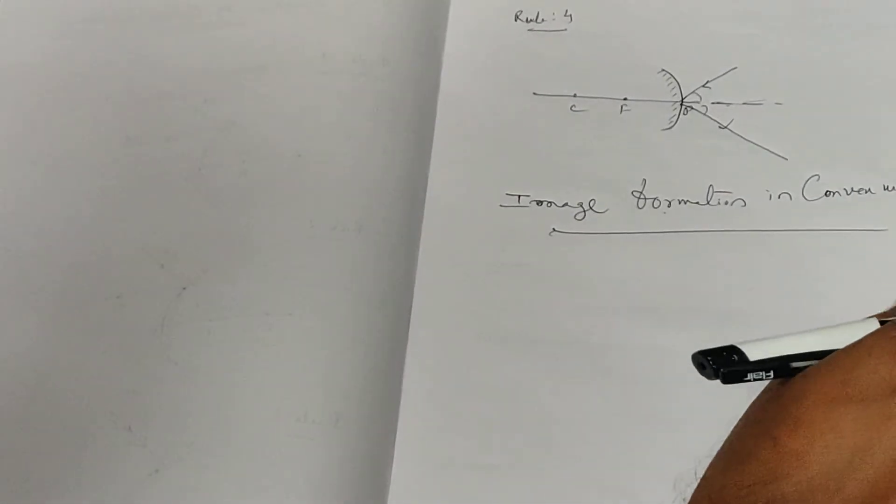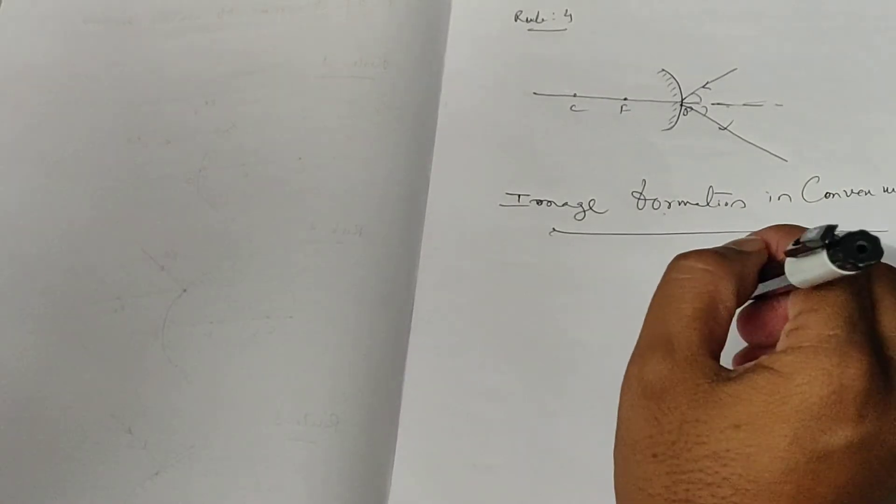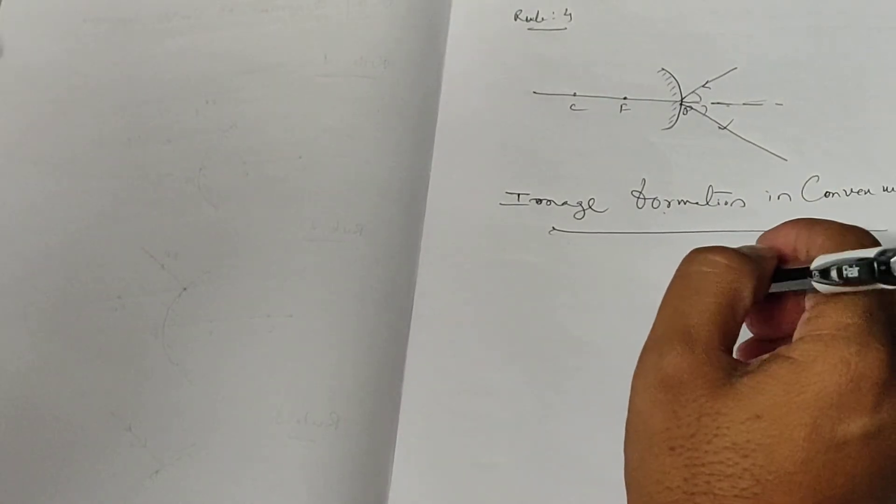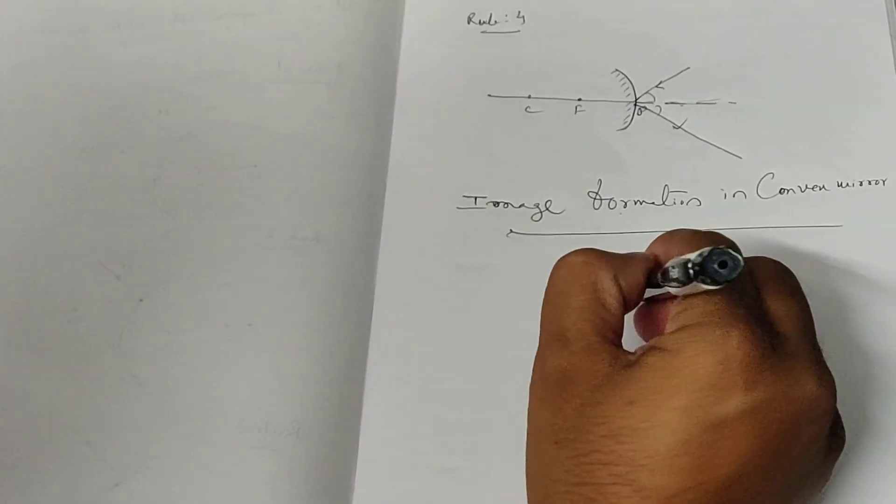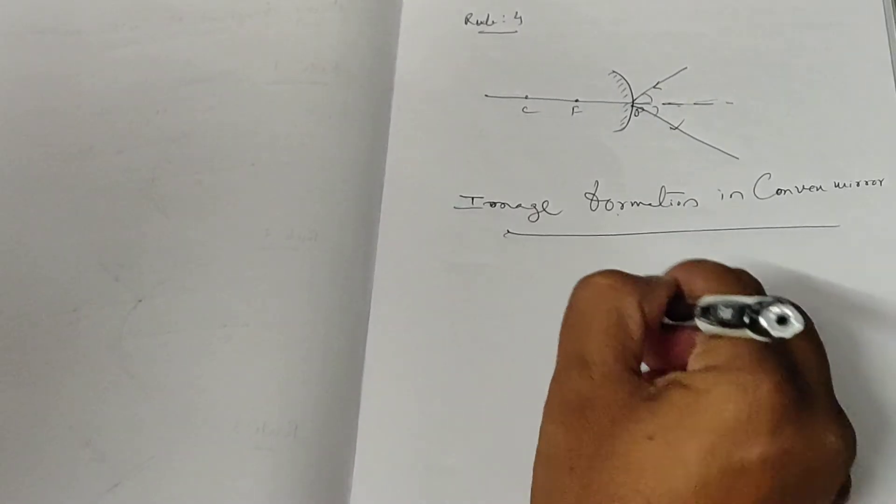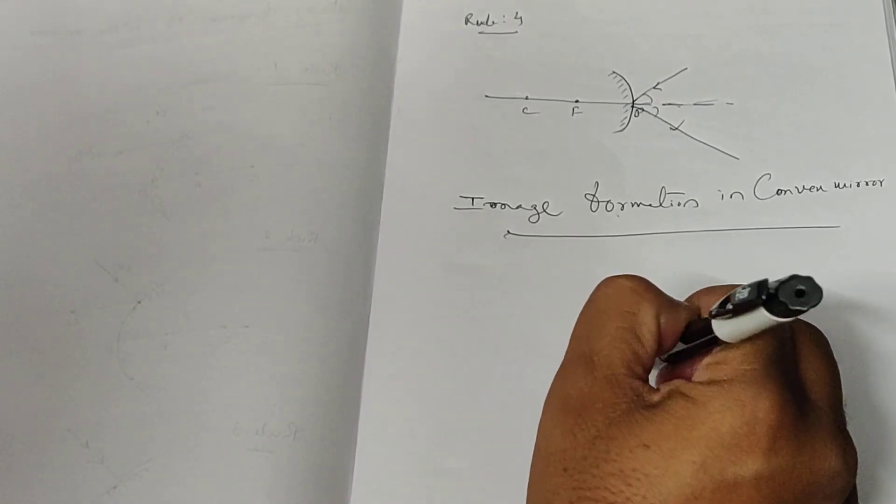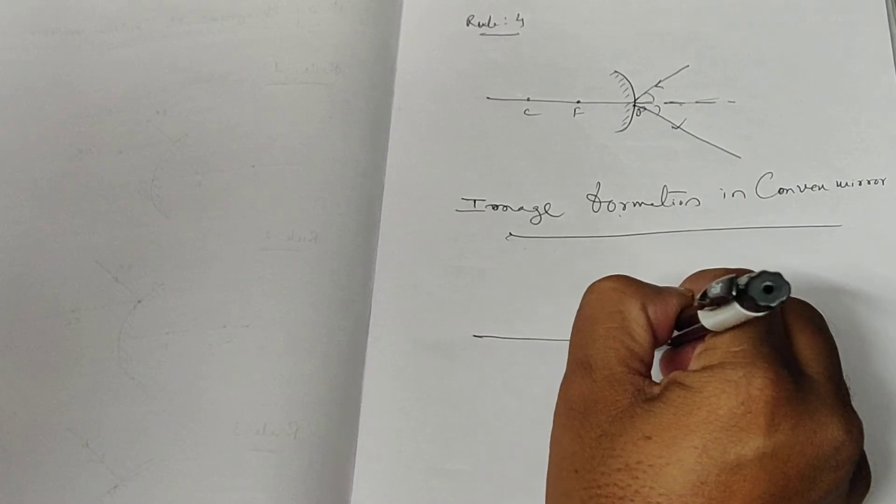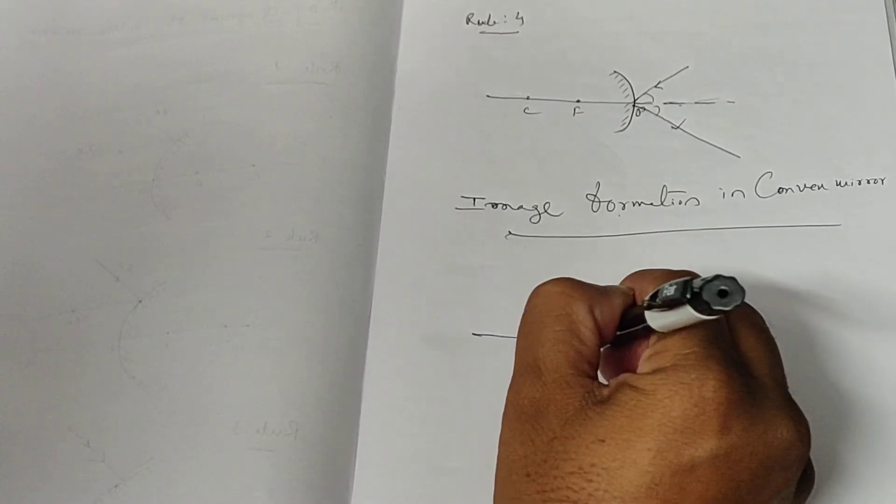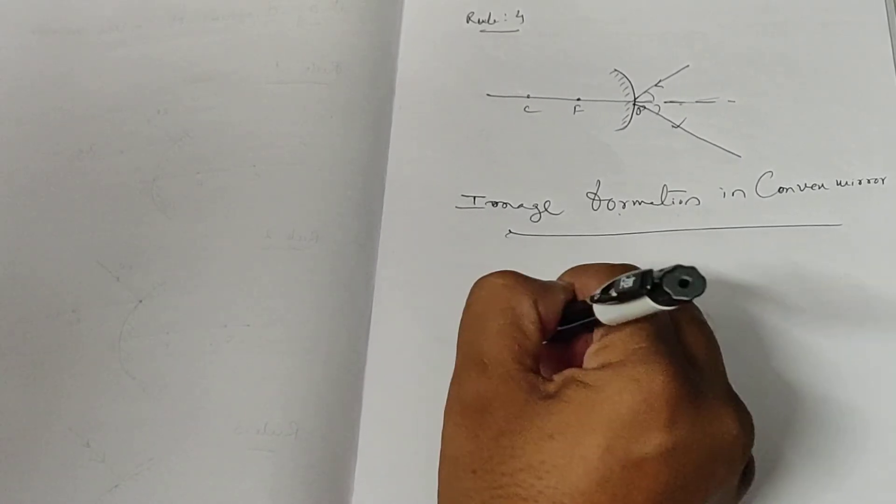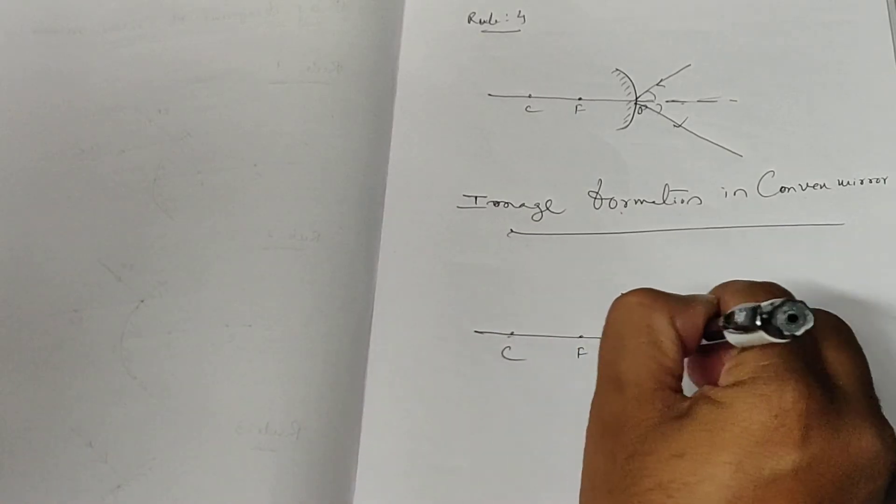In this one we have only one image diagram for any position of the object. For example, this is the convex mirror, and we know this is the pole, this is the F, and C is the center of curvature.